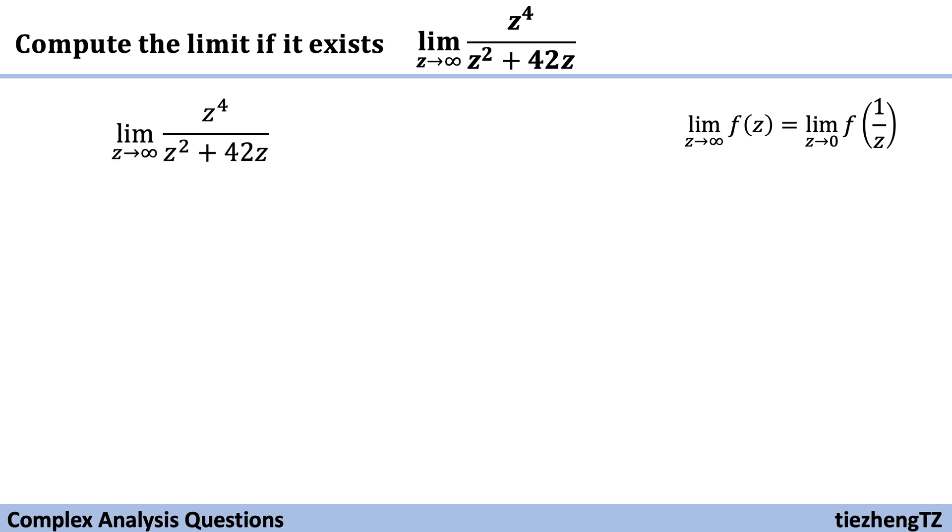From this original function, we can rewrite it into the limit of (1/Z)⁴ over (1/Z)² plus 42(1/Z) when Z approaches zero. We can multiply Z⁴ to both the numerator and denominator, so we have the limit of 1 over Z² plus 42Z³ when Z approaches zero.